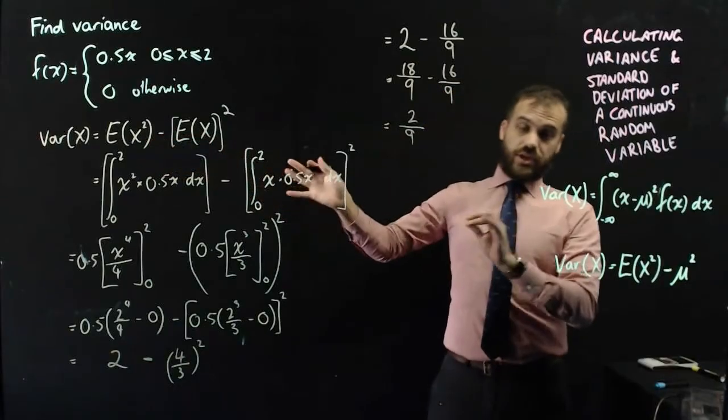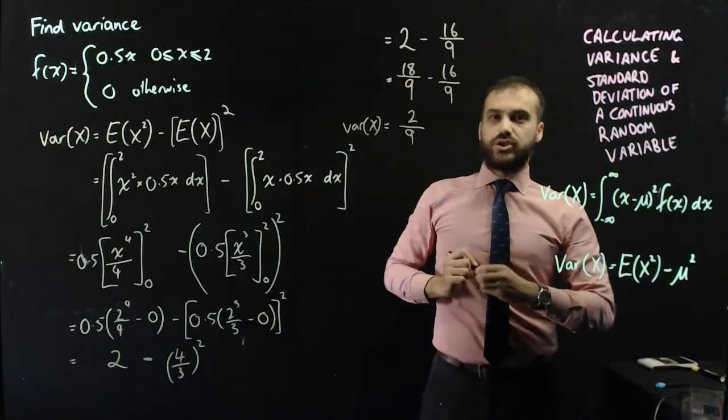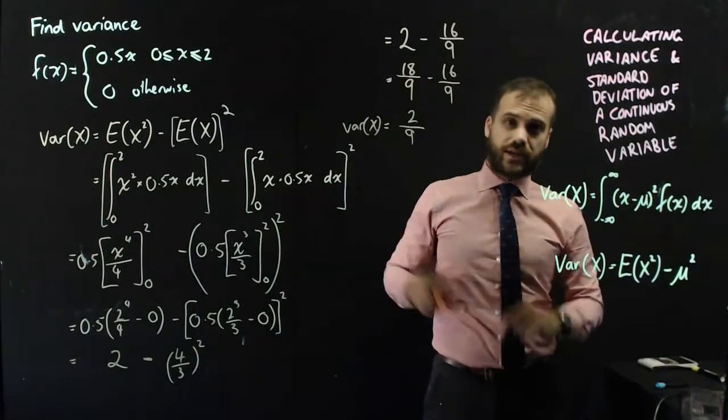The variance, which is the thing I was trying to find, is equal to 2 over 9. And, we can put that in a calculator if we want.